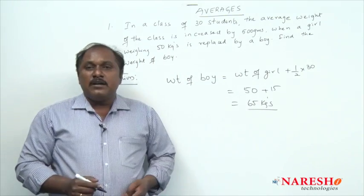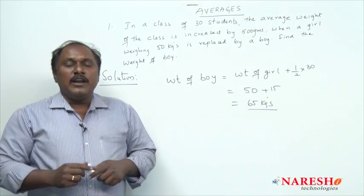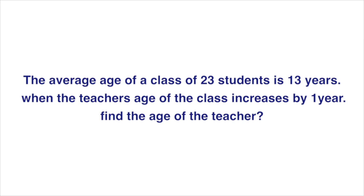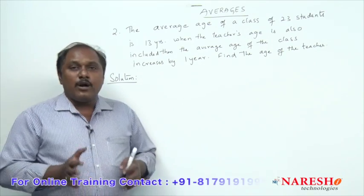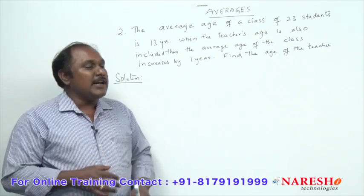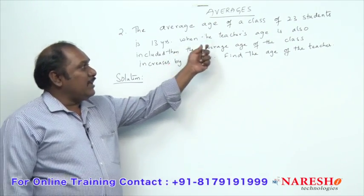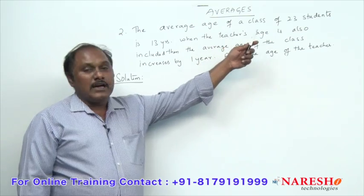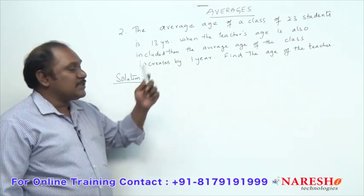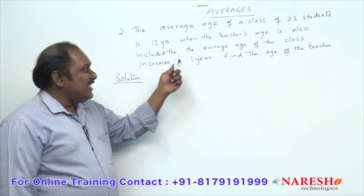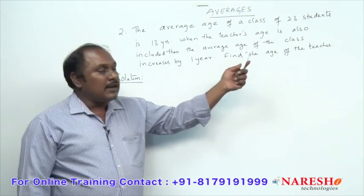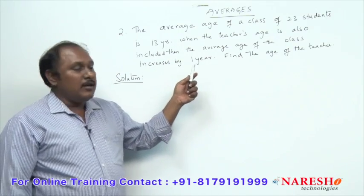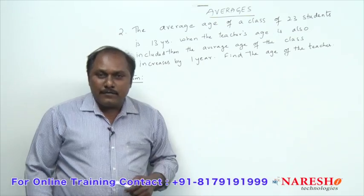This is a simple logical method to answer that question. Now let us take one more example. The average age of a class of 23 students is 13 years. When the teacher's age is also included, the average age of the class increases by one year. Find the age of the teacher.